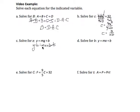I now have Y minus B equals MX. I'm solving for X. I can divide both sides by M, just M. So the M's on the right-hand side, that reduces to 1. So I'm left with Y minus B over M equals X.